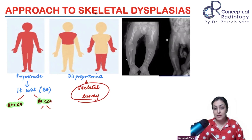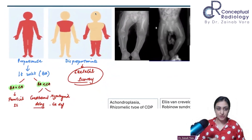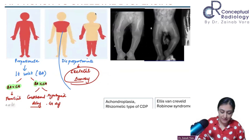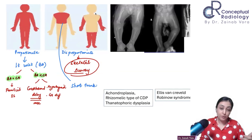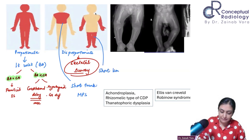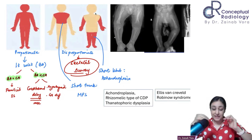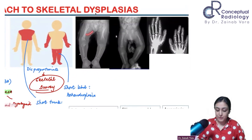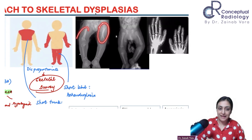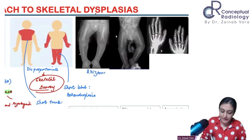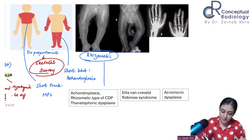In disproportionate short stature, there are two types: short trunk dysplasia — the prototype being mucopolysaccharidosis — and short limb dwarfism, the prototype being achondroplasia. For short limb dwarfism, we further assess whether the proximal, distal, or acral bones are shorter. If proximal bones like the femur or humerus are shorter, this is called rhizomelic shortening, seen in achondroplasia, rhizomelic chondrodysplasia punctata, and thanatophoric dysplasia.